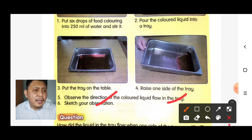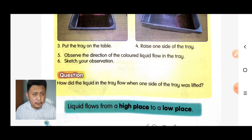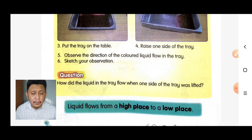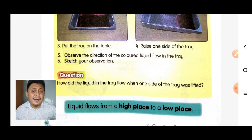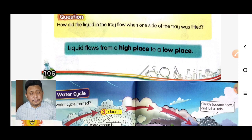The question is: how did the liquid in the tray flow when one side of the tray was lifted? The liquid flows from a high place to a lower place. That's all for today — see you in the next lesson, thank you very much!